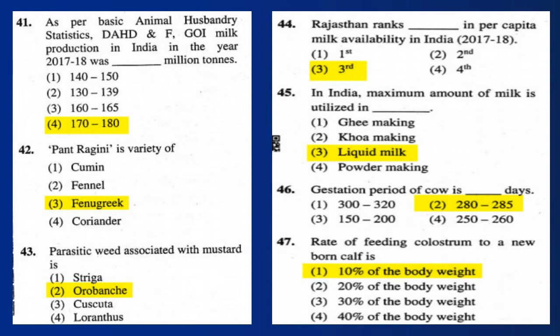Question 45: In India, the maximum amount of milk is utilized as liquid milk. Question 46: The gestation period of a cow is 282 to 285 days.